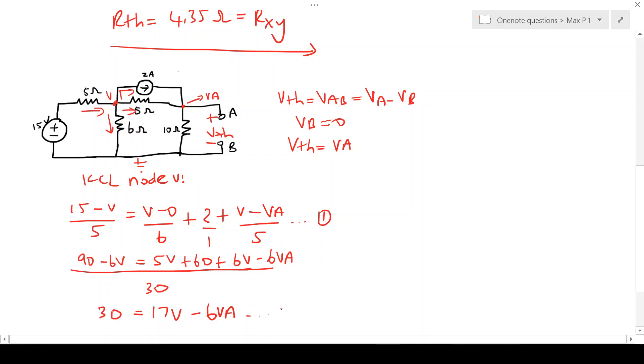If we look at our second equation which will be KVL node VA, the current goes in, that goes in, and that goes out. So we're going to say 2 plus V minus VA over 5 equals VA minus 0 over 10.